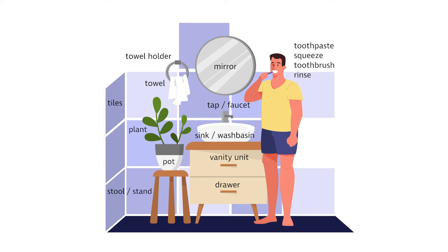There is a round mirror on the wall and a sink or wash basin with a modern water tap or faucet. The round wash basin is sitting on a vanity unit, which is just a fancy name for a storage unit or cupboard underneath the sink, and this unit has got two drawers.